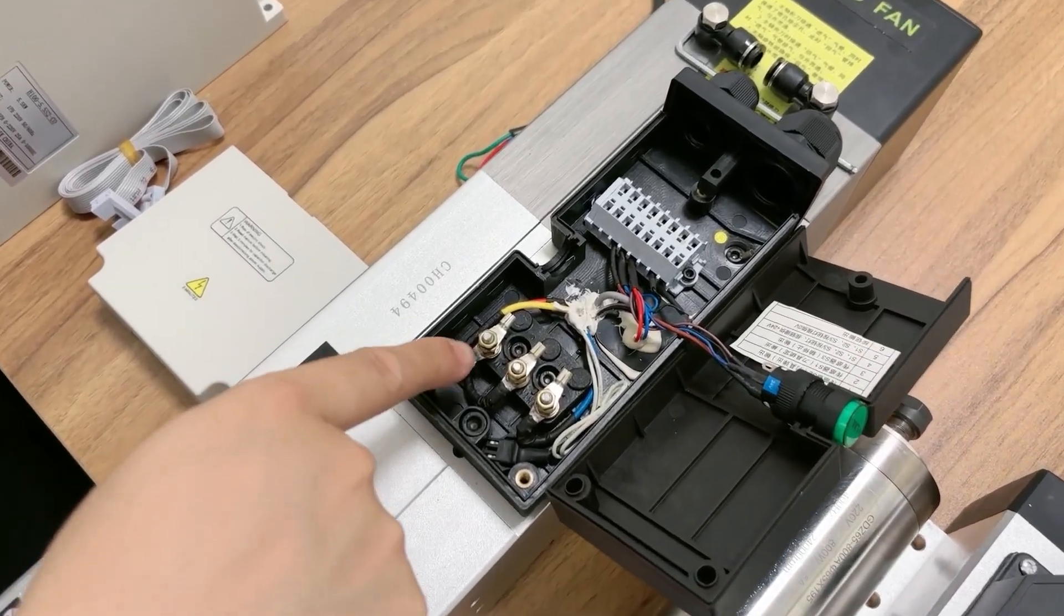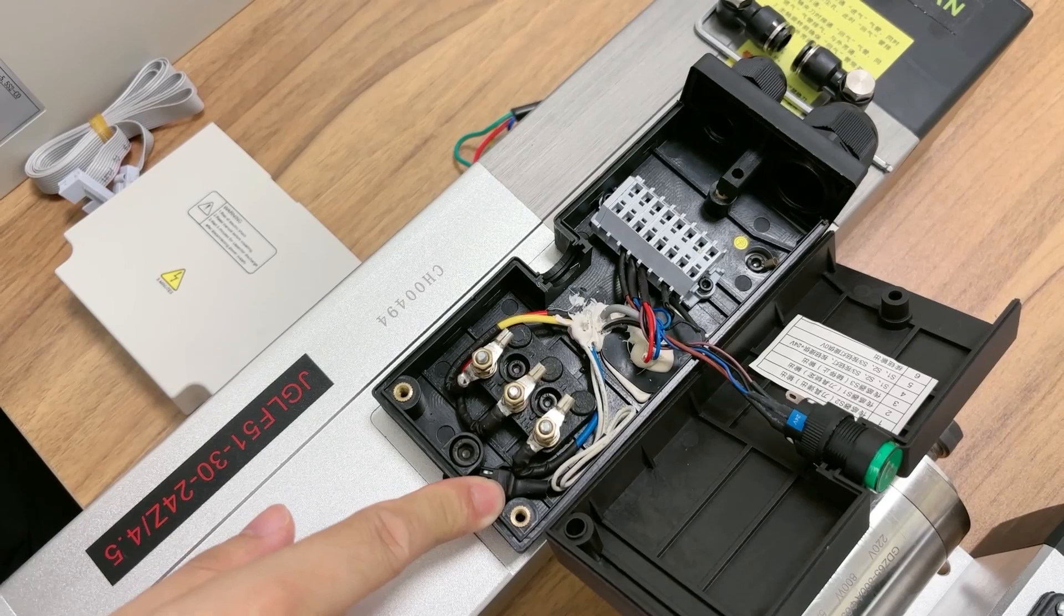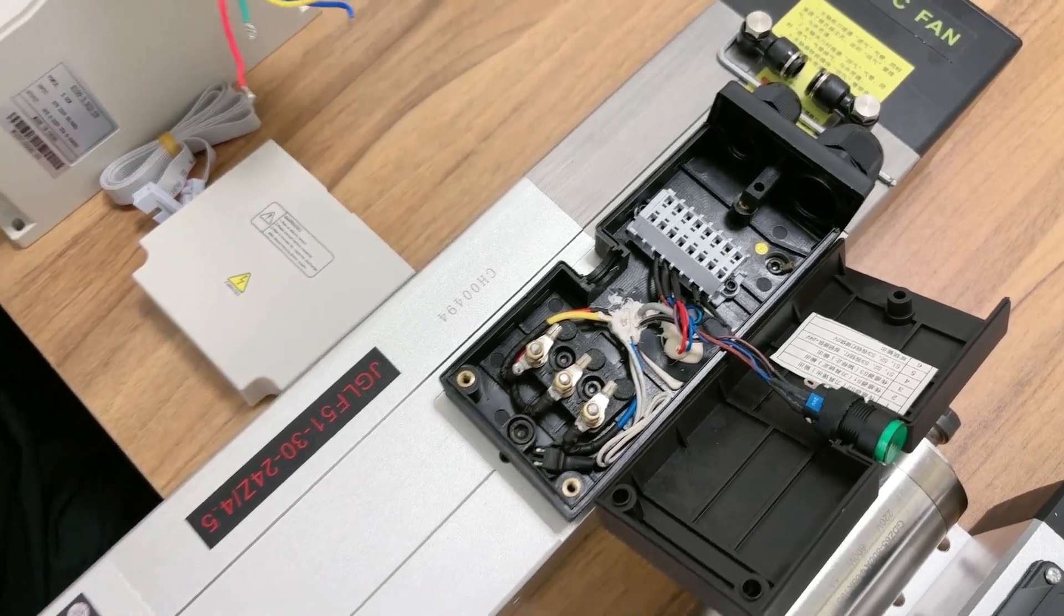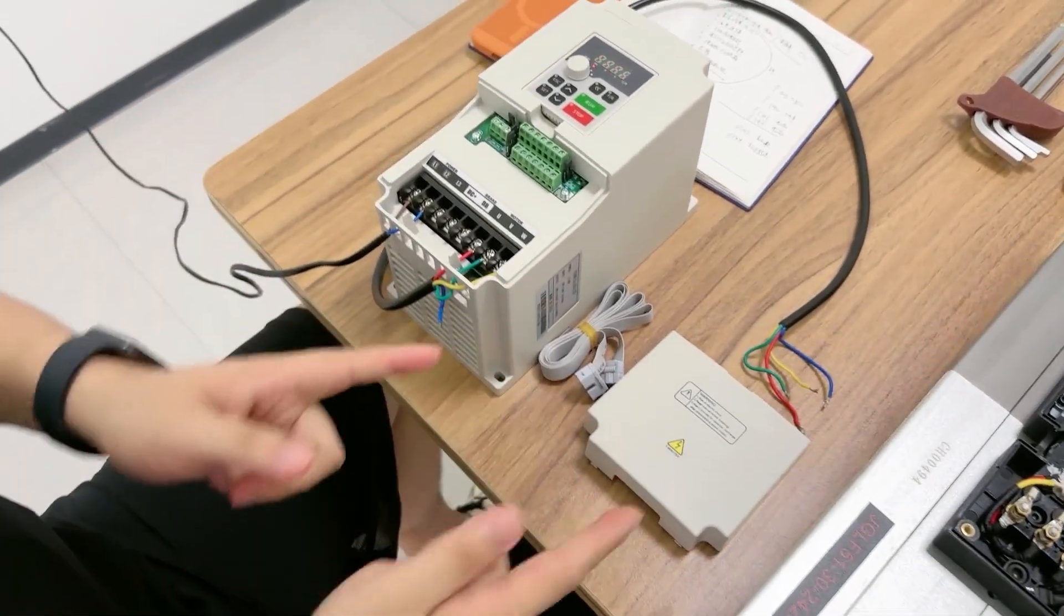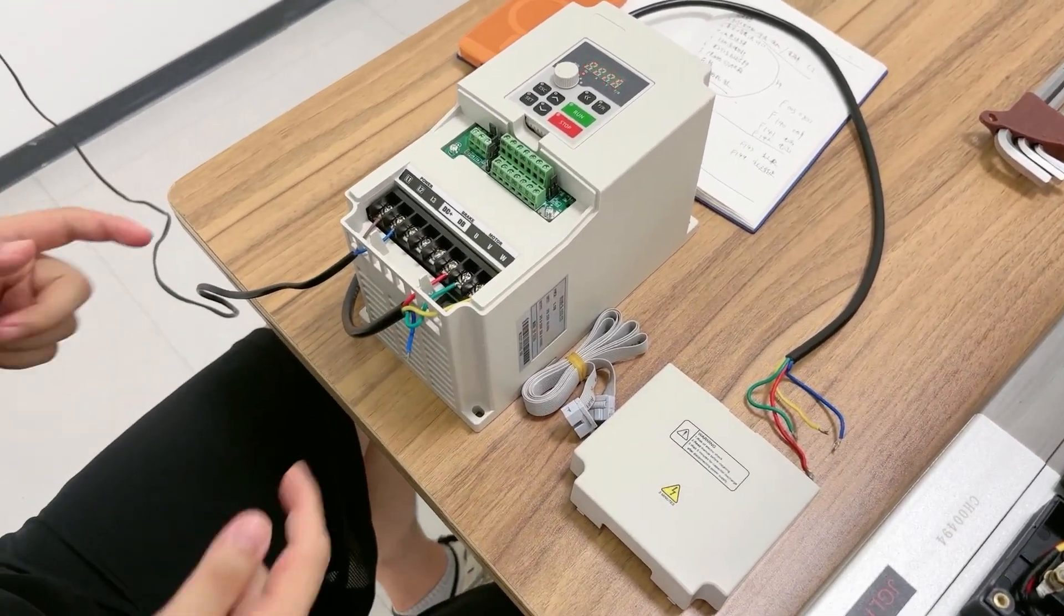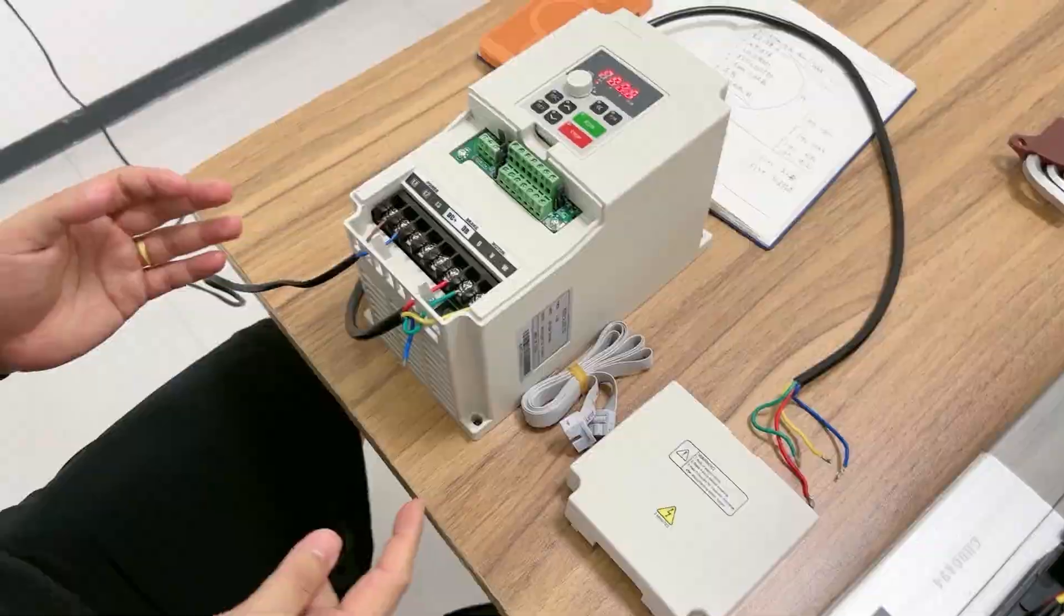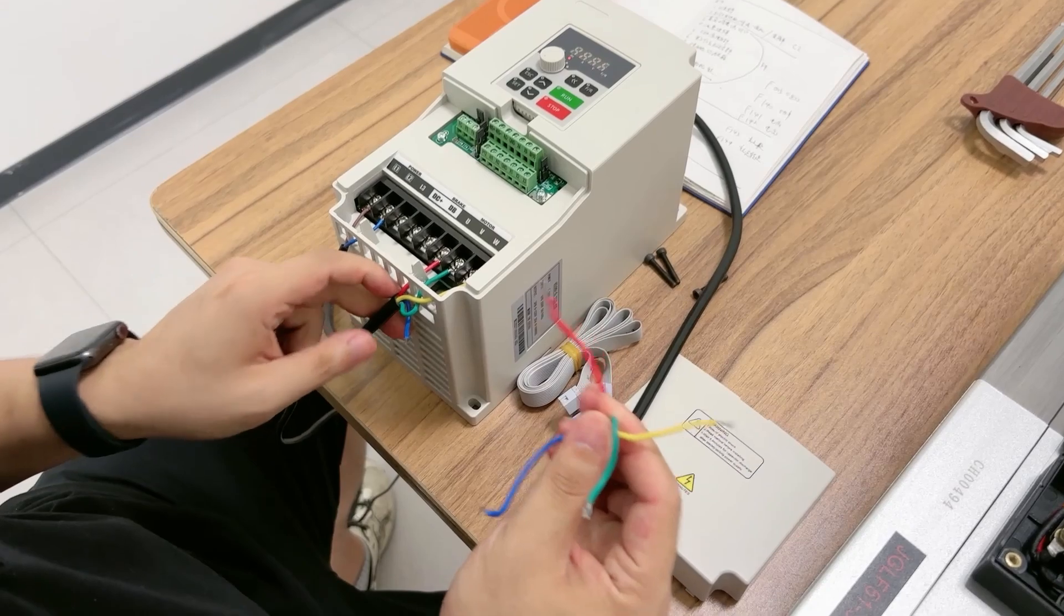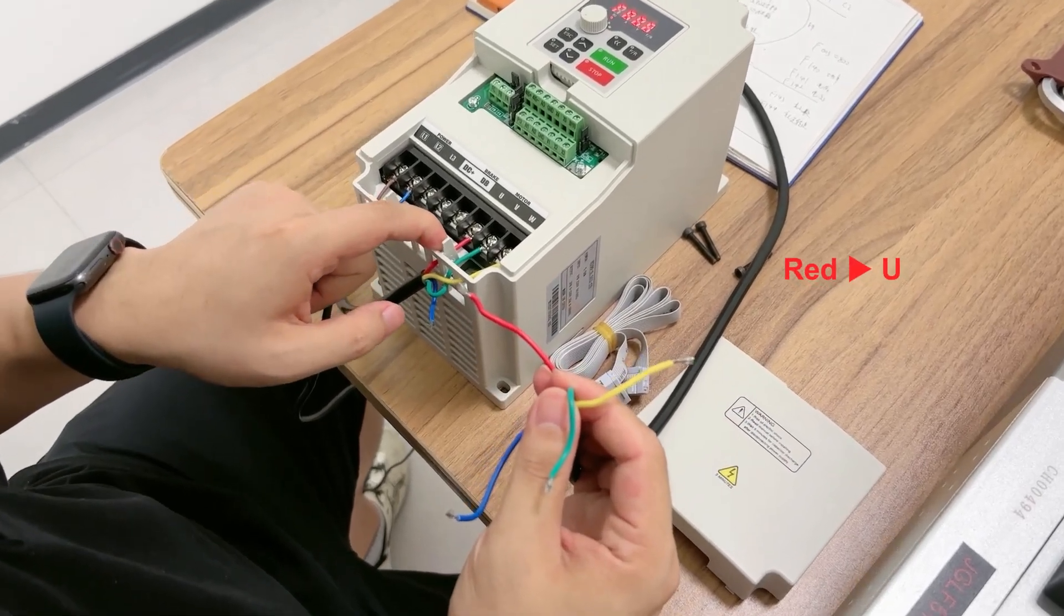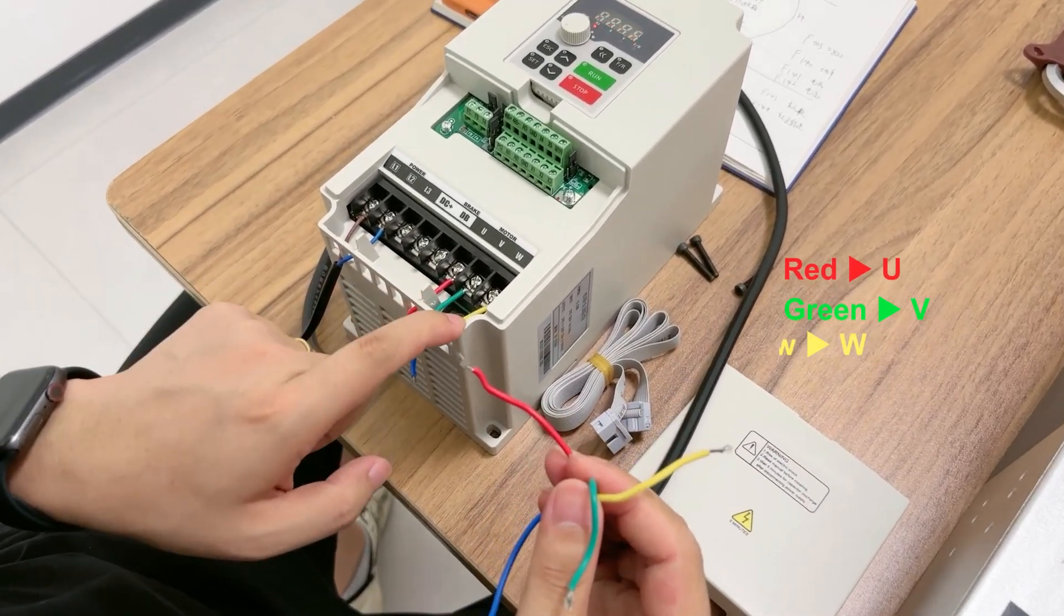Look, here is UVW. I need to connect it. Before connecting the wires, we need to cut the power - remember. And then we need the crossbar. Remember the color of the wires - look, red is U, green is V, yellow is W.